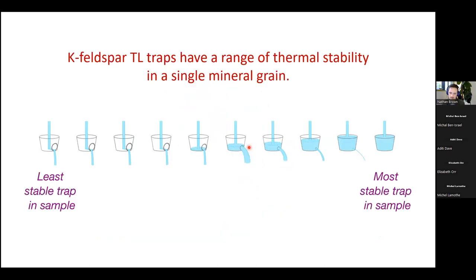Now, here is the part that I hinted at earlier and where it becomes really useful. So K-Feldspar thermal luminescence, TL. This just means we're heating the sample to get the signal in. So K-Feldspar traps have a range of thermal stability, even within a single mineral grain. So in one way of thinking about it, it's as if you have a range of thermochronometers. You have multiple thermochronometers within your single grain.